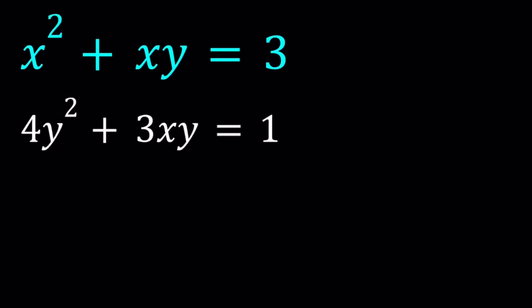Hello everyone. In this video we're going to be solving a polynomial system. We have x squared plus xy equals 3 and 4y squared plus 3xy equals 1. So we're going to solve this system, find the solutions, and then at the end I'm going to show you a graph of these equations. Let's go ahead and get started.